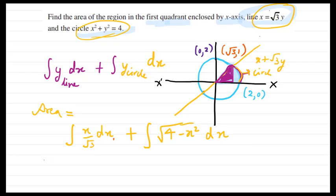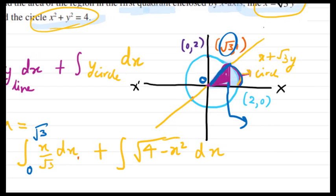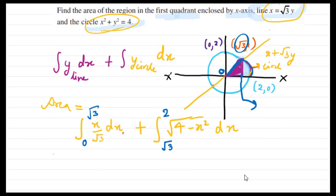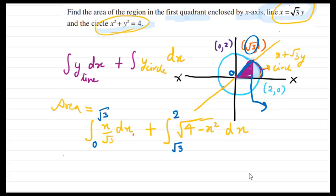We need to write the limits as well. For the first integral — the line part — the limits start from 0 and go up to √3, since that is the x-coordinate of the intersection point. For the circle part, it starts from √3 and goes up to 2. It's very important to draw the diagram first and then set the correct limits for each part.